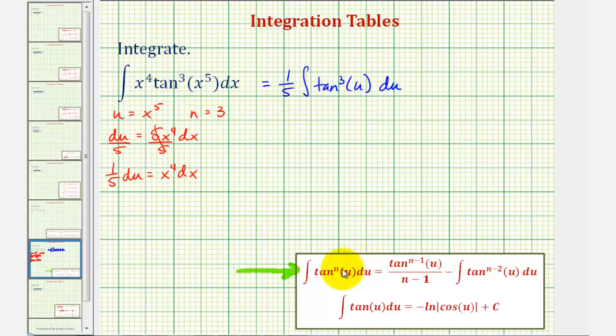Now we have a perfect match for our integration formula. This equals one-fifth times tangent to the power of n-1 of u divided by n-1. Since n equals 3,